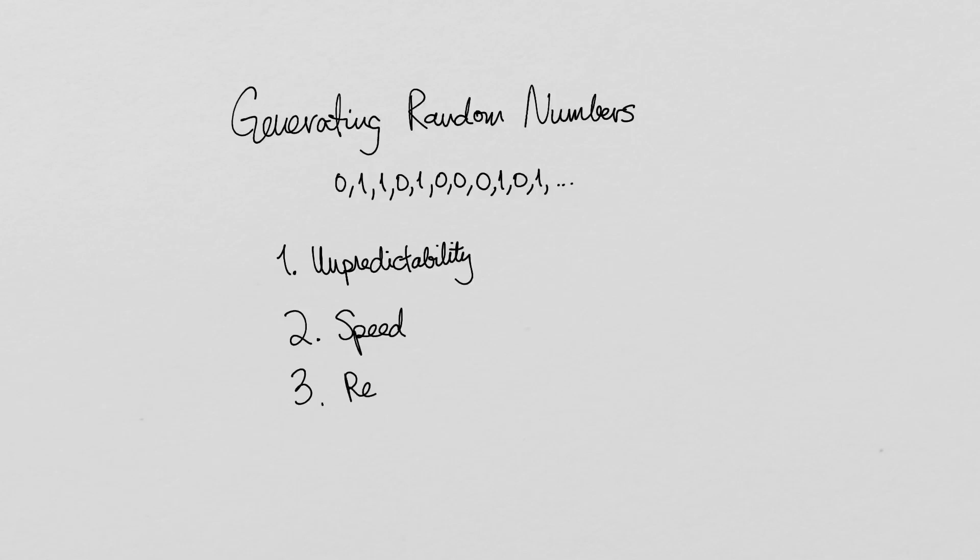Third, reproducibility. If you're debugging or just wanting to change the font in a figure without changing the random function you've graphed, it's helpful to be able to run your program repeatedly and get the same results.